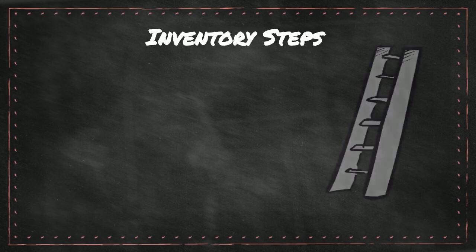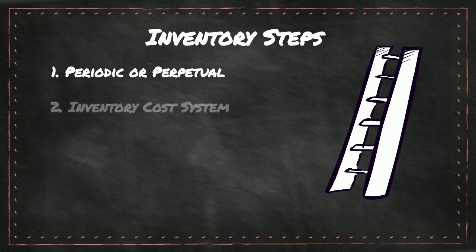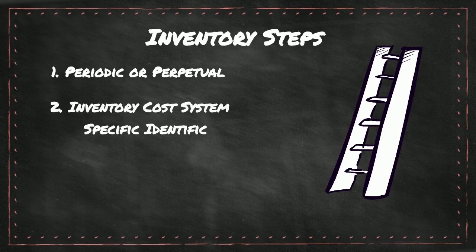There are several steps to inventory. First, you have to choose between a periodic system or a perpetual system. Then you must pick which inventory costing system to use: specific identification, FIFO, LIFO, or average cost.